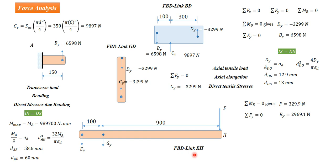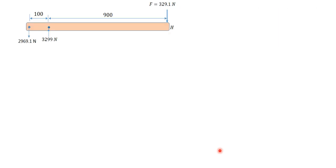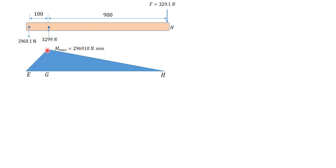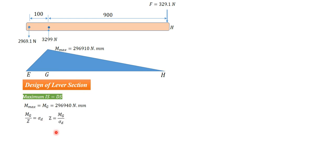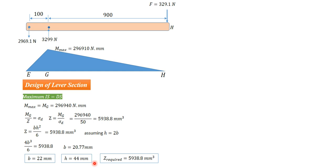The free body diagram of lever EH shows it is under a transverse load causing bending, so bending stresses govern the design. Using the bending moment diagram, the maximum bending moment is 296,910 N·mm. Setting maximum induced stress equal to design stress via the bending formula gives Z_required = 5938.8 mm³. Assuming H = 2B, we get B = 20 mm and H = 44 mm.